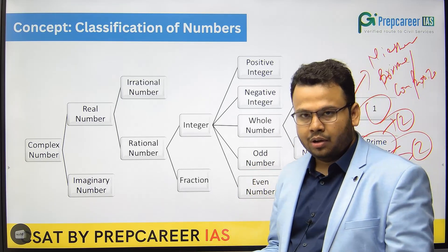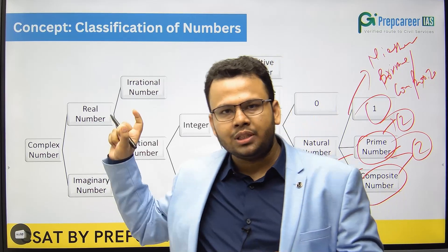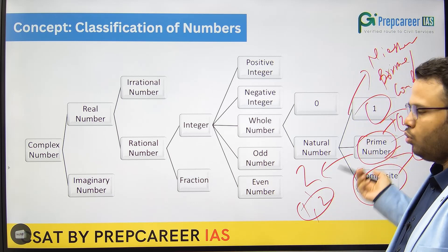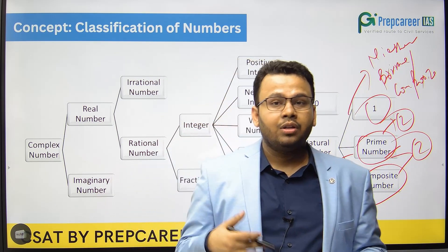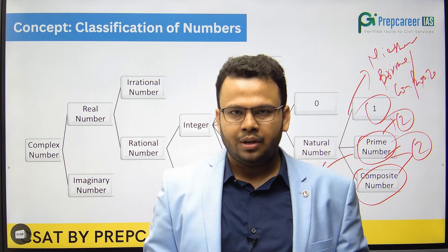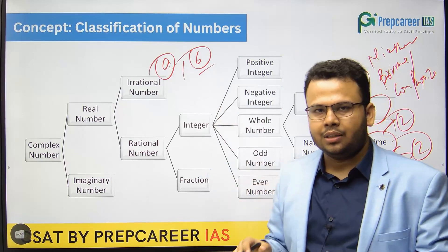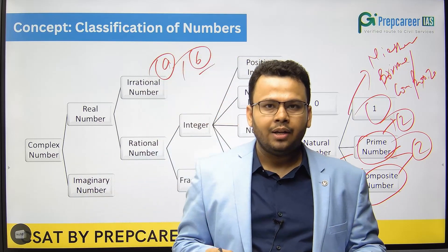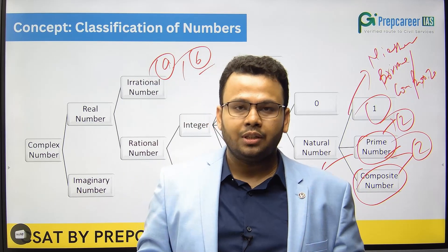This is the classification of numbers that you need to understand. If a question is given on the classification of numbers, you can easily solve it. You will be given questions based on this classification and also on the properties — for example, you may be given two prime or composite numbers and asked to find the result of their addition, multiplication, or division. Or you may be given two numbers, odd and even, and asked what happens when you add, multiply, or divide them. Thank you for watching this video. Have a nice day.